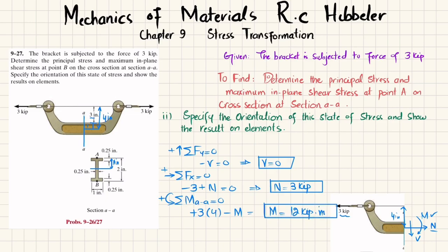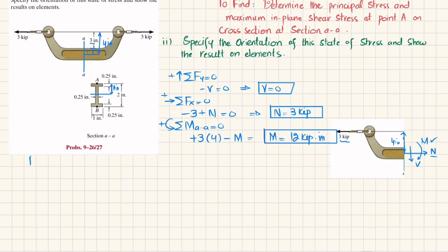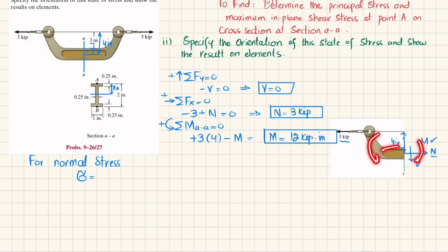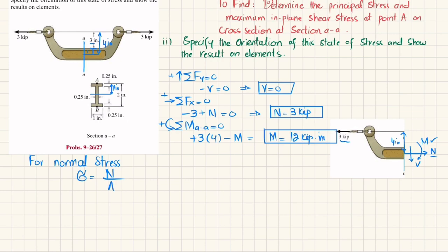Now for normal stress: sigma is the combination of normal stress acting on the surface due to the axial force and bending stress due to the moment. Since we are at point B, which is on the lower portion, the bending stress will be compressive. So the formula is: sigma equals N over A minus M times y divided by I.